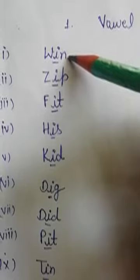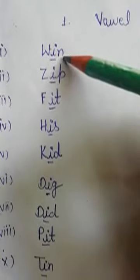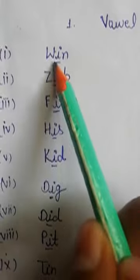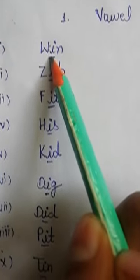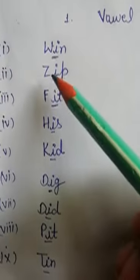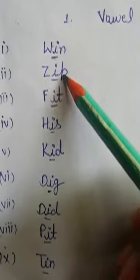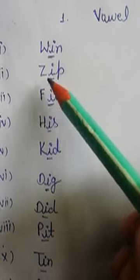First word हमें दिया W, I, N - Win. इसमें vowel क्या है? I. यह I हमें vowel दिया गया है. Z, I, P - Zip. इसमें भी vowel I दिया है.